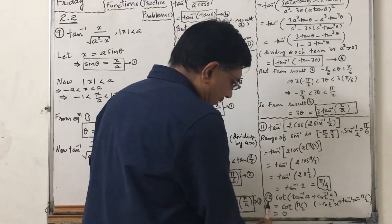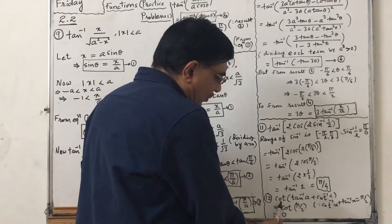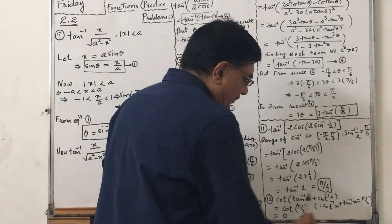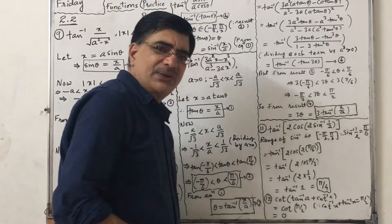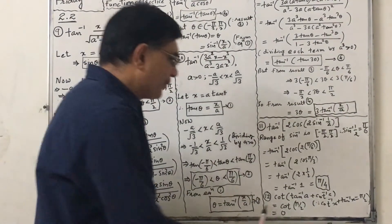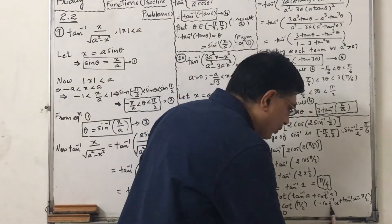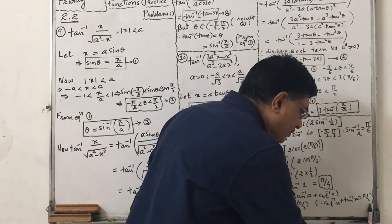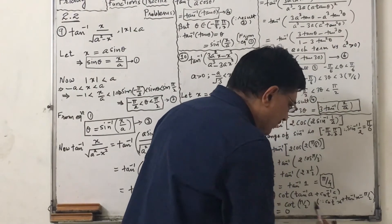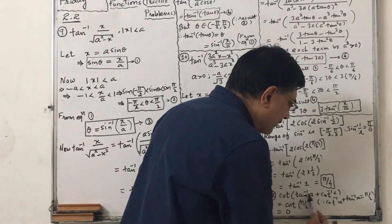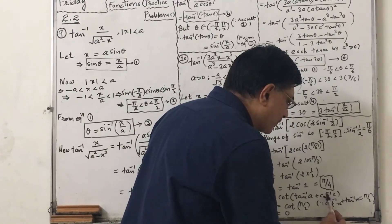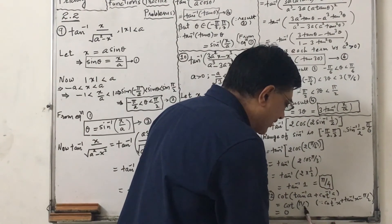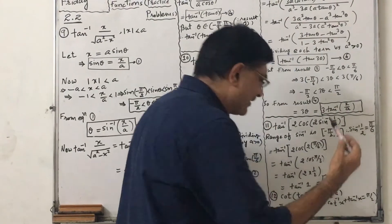And problem 12: cot(tan⁻¹a + cot⁻¹a). We know that cot⁻¹x + tan⁻¹x = π/2. So tan⁻¹a + cot⁻¹a = π/2, and cot(π/2) = 0.